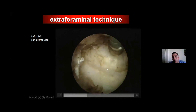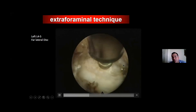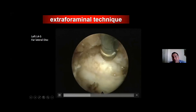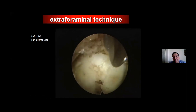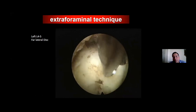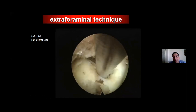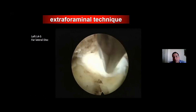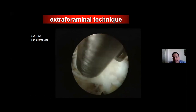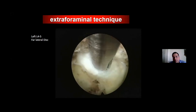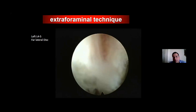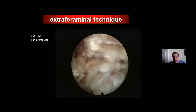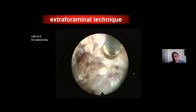This is the annulus, and this is the nerve root — you can see it here. This is the view after decompression.